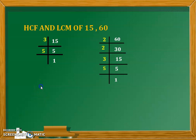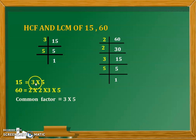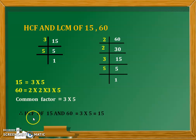In the previous video, after finding the factors we are supposed to list them all together. After listing them together, we are going to find the common factors. The common factors are 3 multiplied by 5. These two are common in both numbers. So 3 multiplied by 5 is the common factor, which gives us the HCF of 15. The answer is 15, since 3 times 5 is 15.